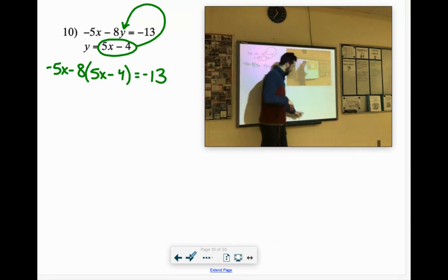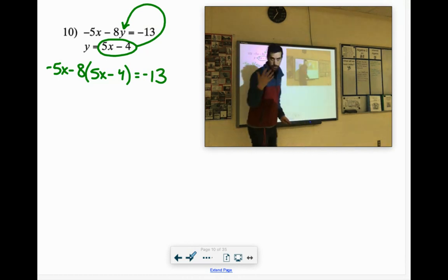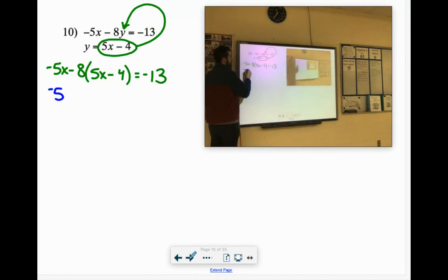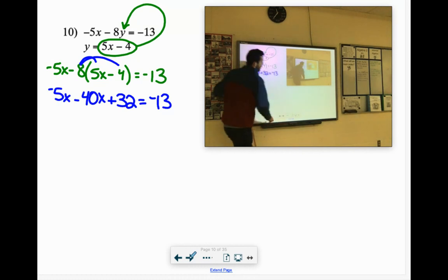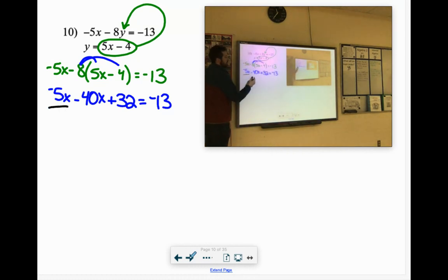This is the first time where we have distribution. Negative 5x. So we're going to distribute negative 8 to both of these, meaning we multiply it. Negative 8 times 5x would be negative 40x. Negative 8 times the negative 4 would be positive 32. Cool, cool. If we combine our like terms, negative 5x, negative 40x would give us negative 45x.